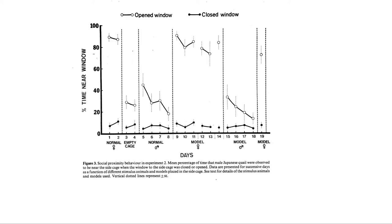The next slide shows the results of a series of experiments — I'm showing these because we did them in my lab, but there's research like this with all kinds of species and laboratories around the world for many years. What we've done is vary what's on the other side of the window and look at how much time the male spends near the window. With a normal female on the other side, the male spends about 90% of its time by the window. If there's an empty cage, his interest drops. If there's another male, his interest drops.